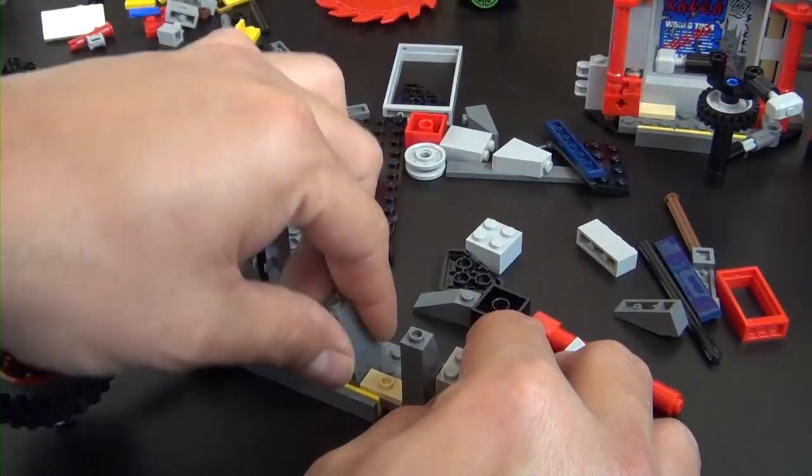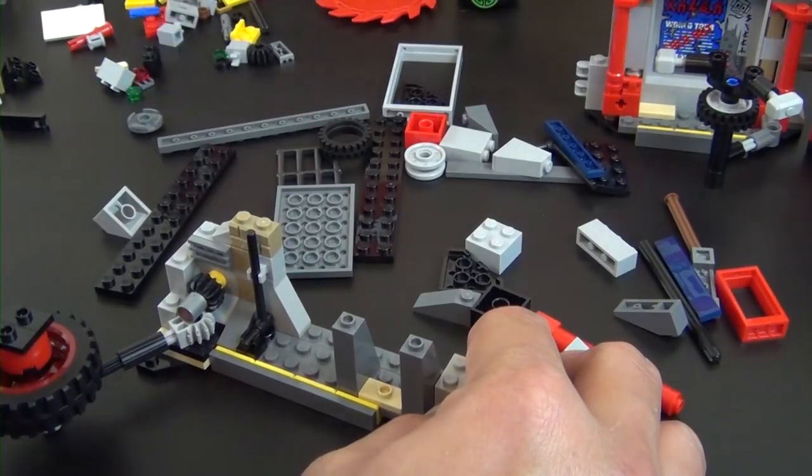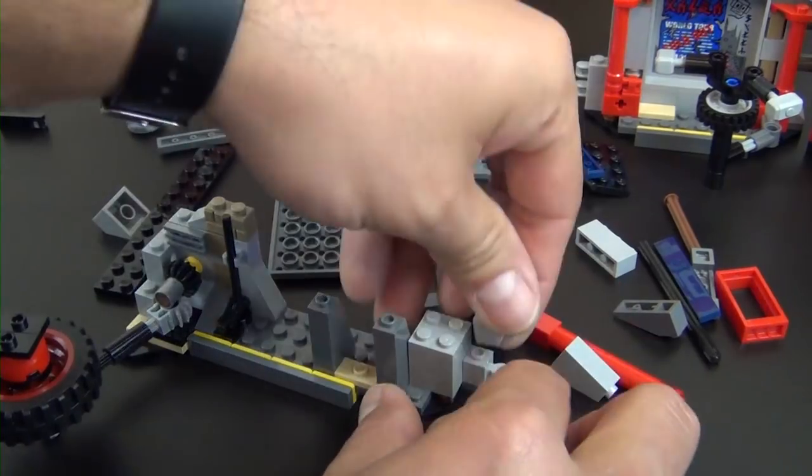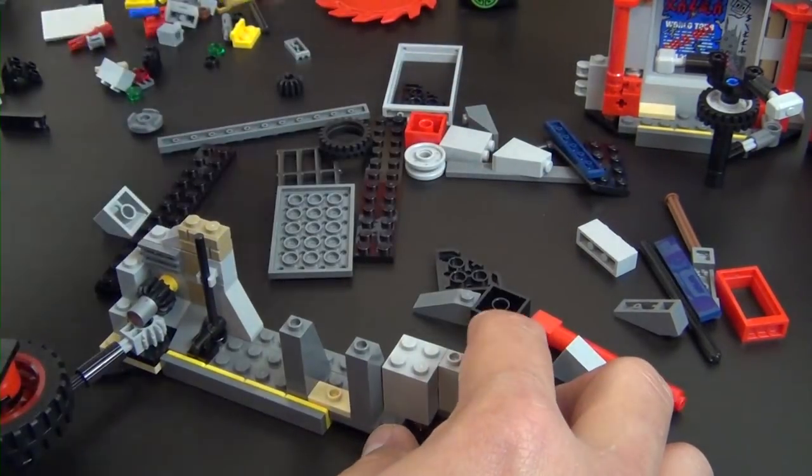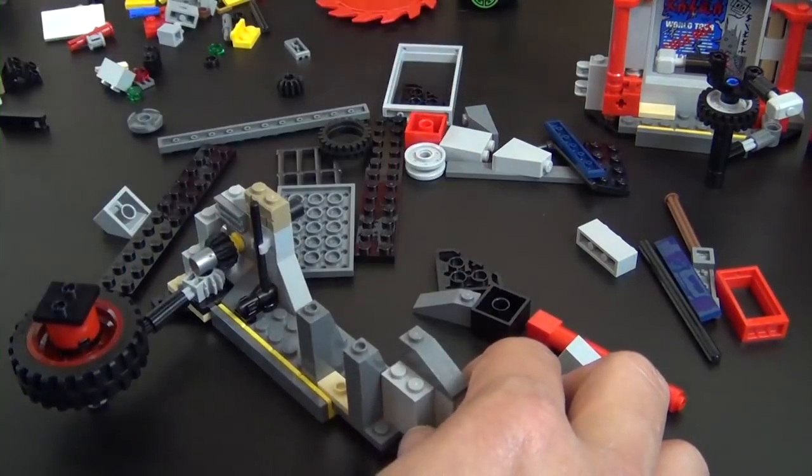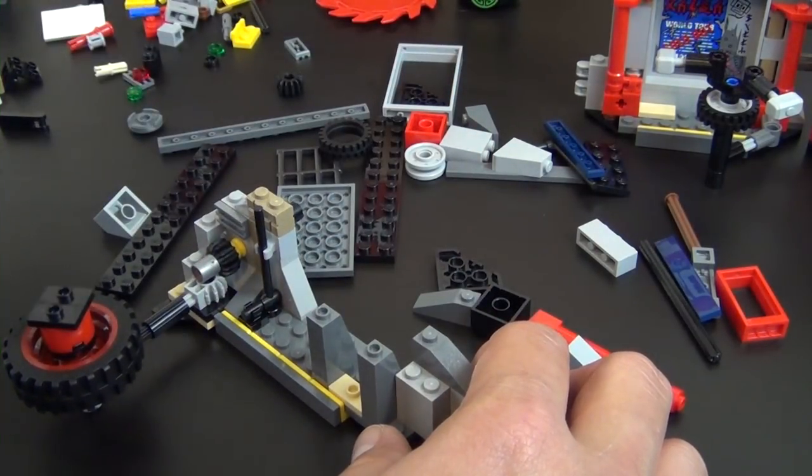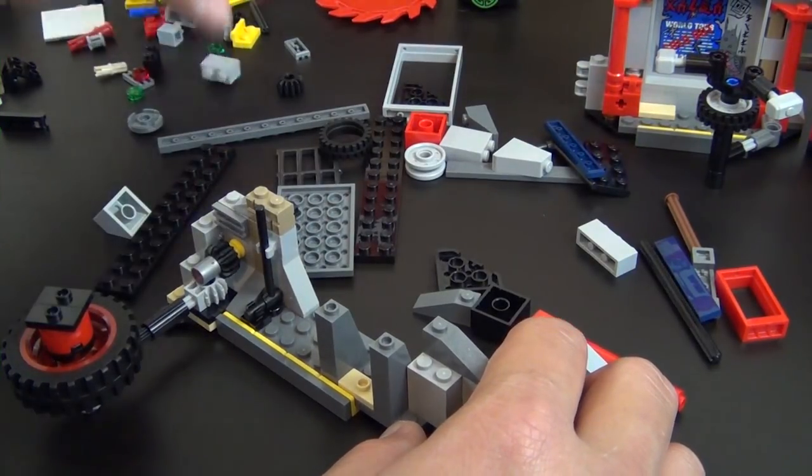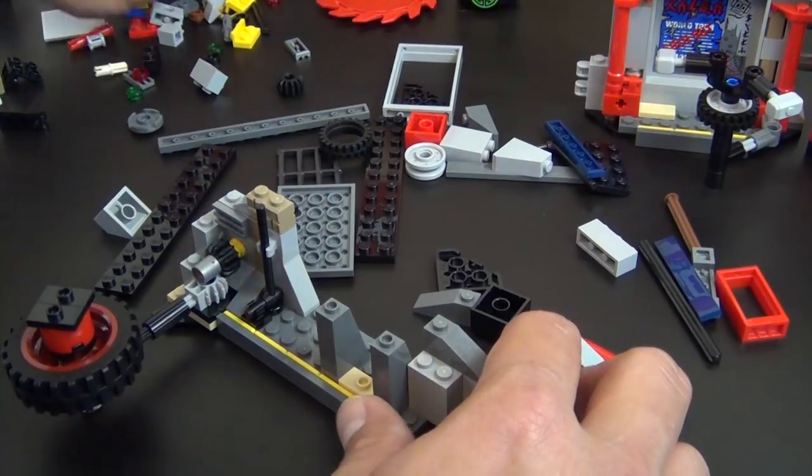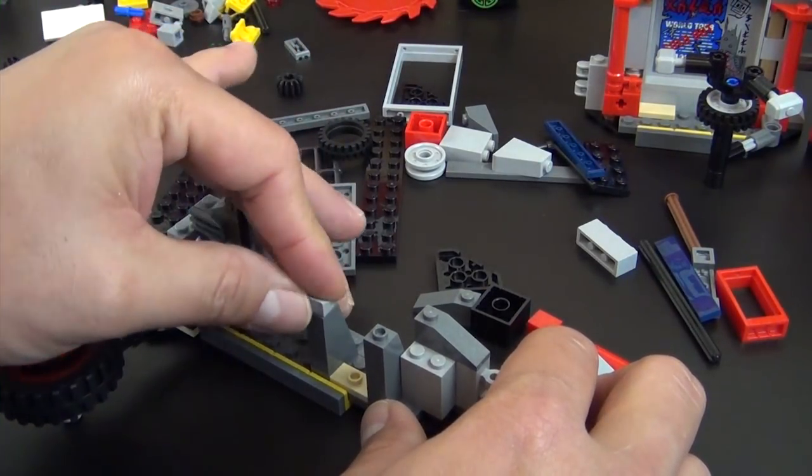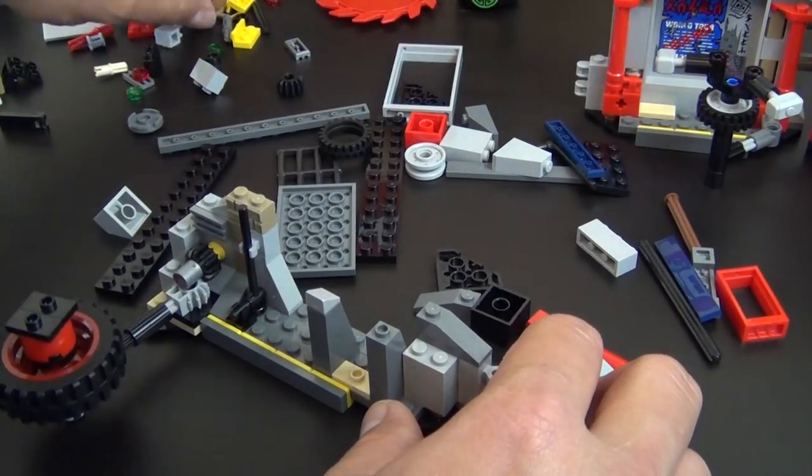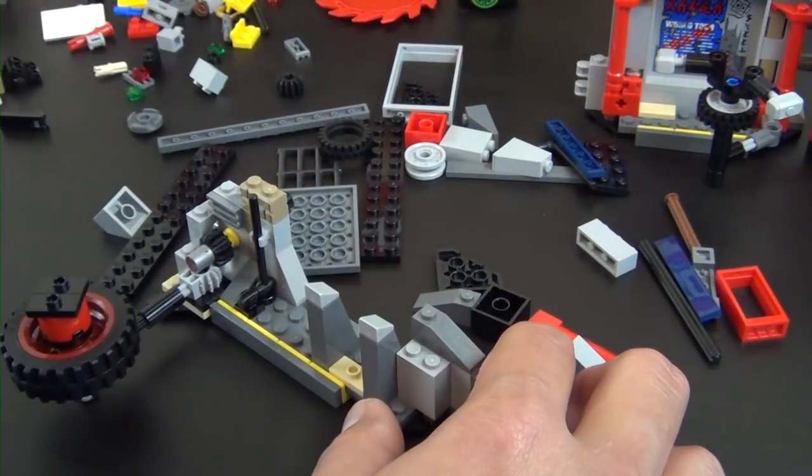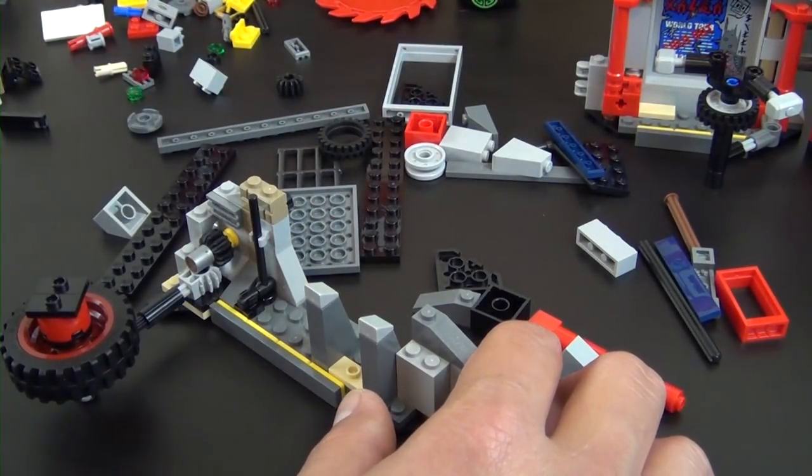Slope brick, slope brick, a jumper tile, another sloped brick, brick here, brick with a clip, slope brick. And where are we at? Two cheese slopes. I'll try to get those as straight as possible. Doesn't really matter, I guess.